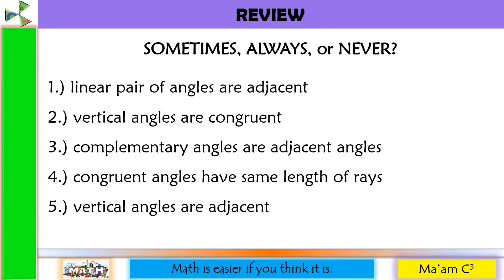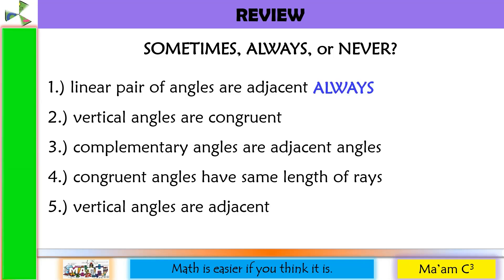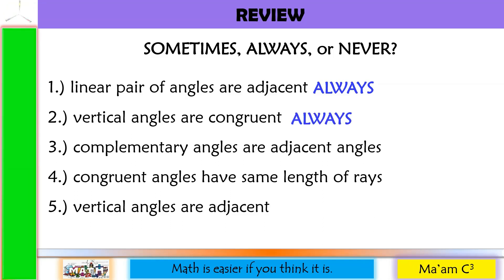Let's have a quick review of our previous lesson: Sometimes, always, or never. Number 1: Linear pair of angles are adjacent. This is always. Number 2: Vertical angles are congruent. Yes, they are. This is always.